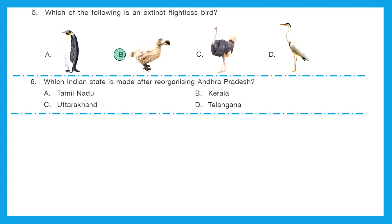Question 6: Which Indian state was made after reorganizing Andhra Pradesh? Is it Tamil Nadu, Kerala, Uttarakhand, or Telangana? The right answer is option D, Telangana. The Andhra Pradesh Reorganization Act of 2014, commonly known as the Telangana Act, is an act of Indian Parliament that split the state of Andhra Pradesh into Telangana and the residuary Andhra Pradesh state.